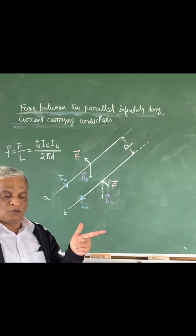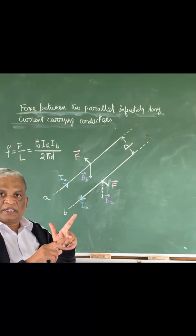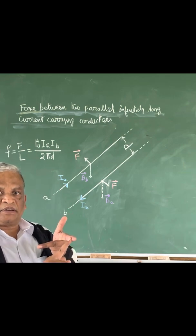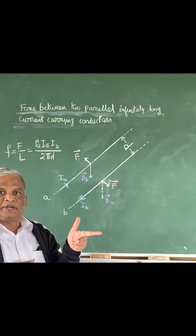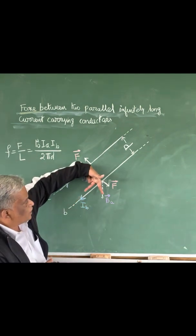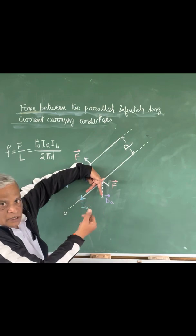Applying Fleming's left hand rule, the middle finger standing for current, four finger pointing in the direction of magnetic field and the extended thumb points in the direction of force. So this is the direction of current and this is the field downward and this is the force.